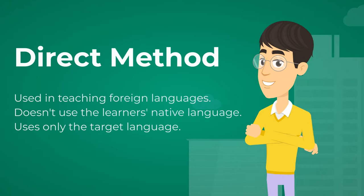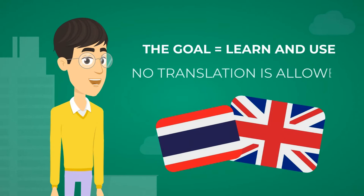The direct method, also called the natural method, is used in teaching foreign languages. It doesn't use the learner's native language and uses only the target language. The goal is to learn how to use a foreign language to communicate, and there is one very basic rule: no translation is allowed.